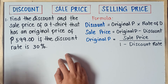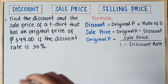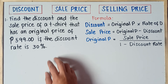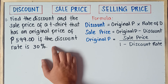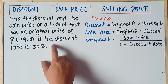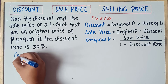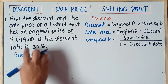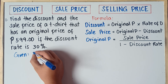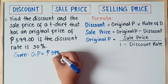Once again class, if you're dealing with problem solving, the first step is you need to understand the problem. Once you understand the problem, you write down the given. So number one: Find the discount and the sale price of a t-shirt that has an original price of 599 pesos if the discount rate is 30%. So we write down the given — Original Price (OP) = 599 pesos.